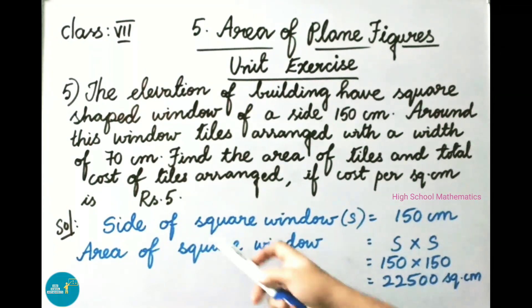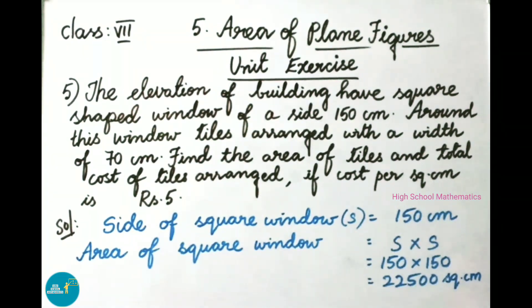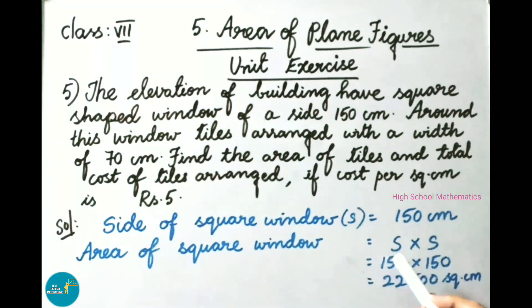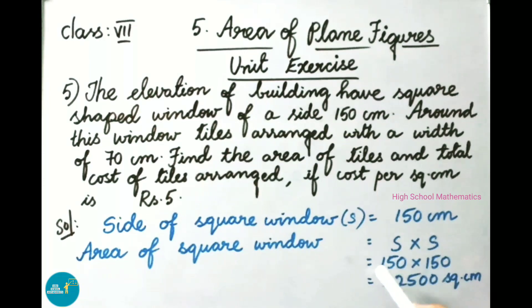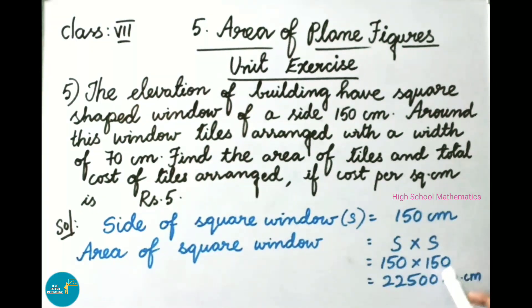Given: side of a square shaped window is 150 cm. Now we shall find the area of the square window. Area of square equals side into side, that is 150 into 150, which equals 22,500 square cm.